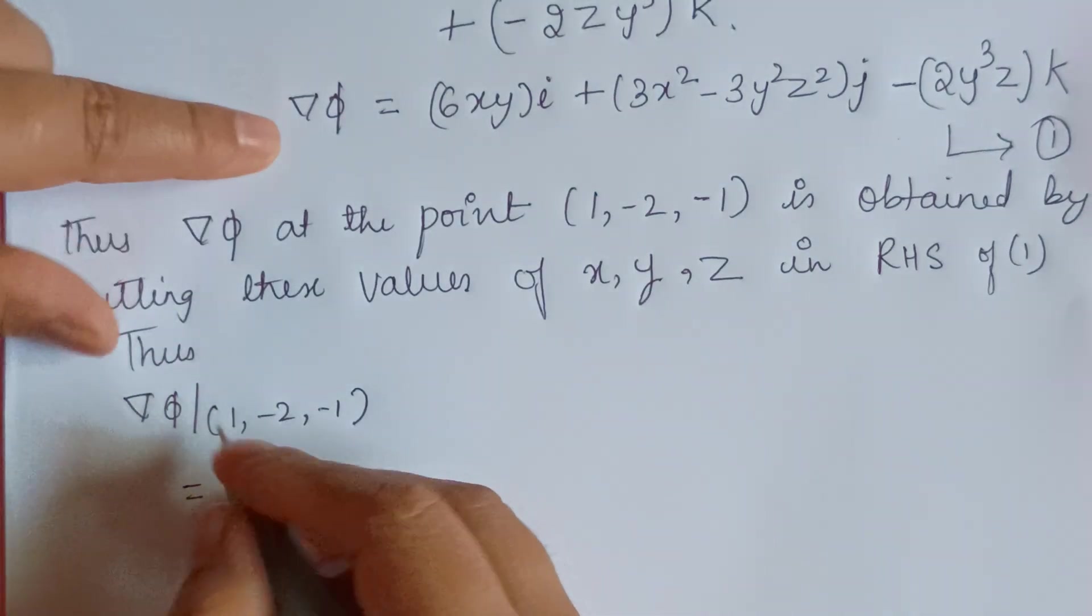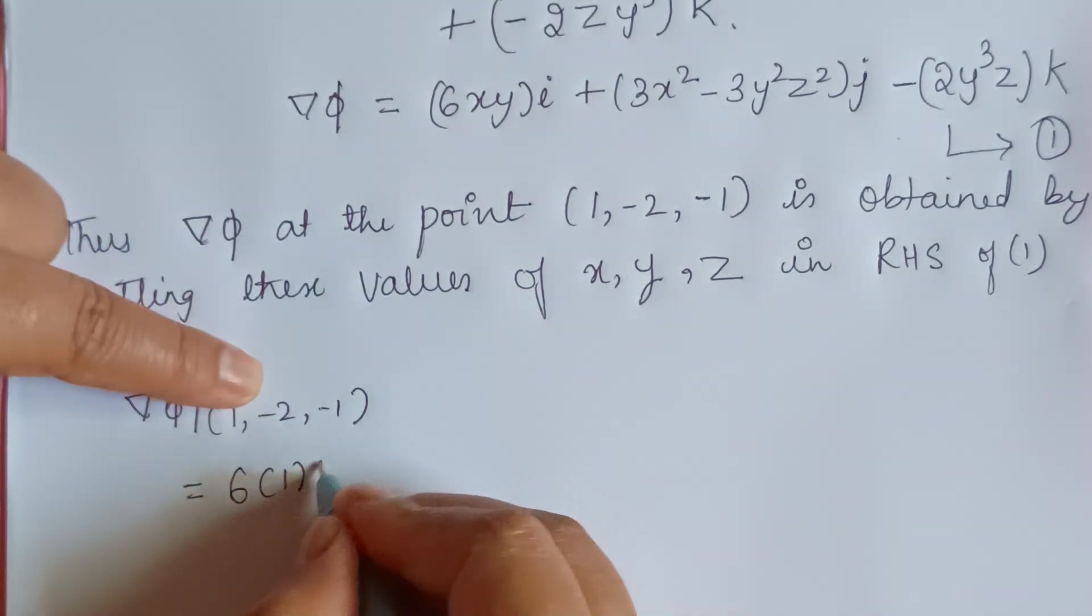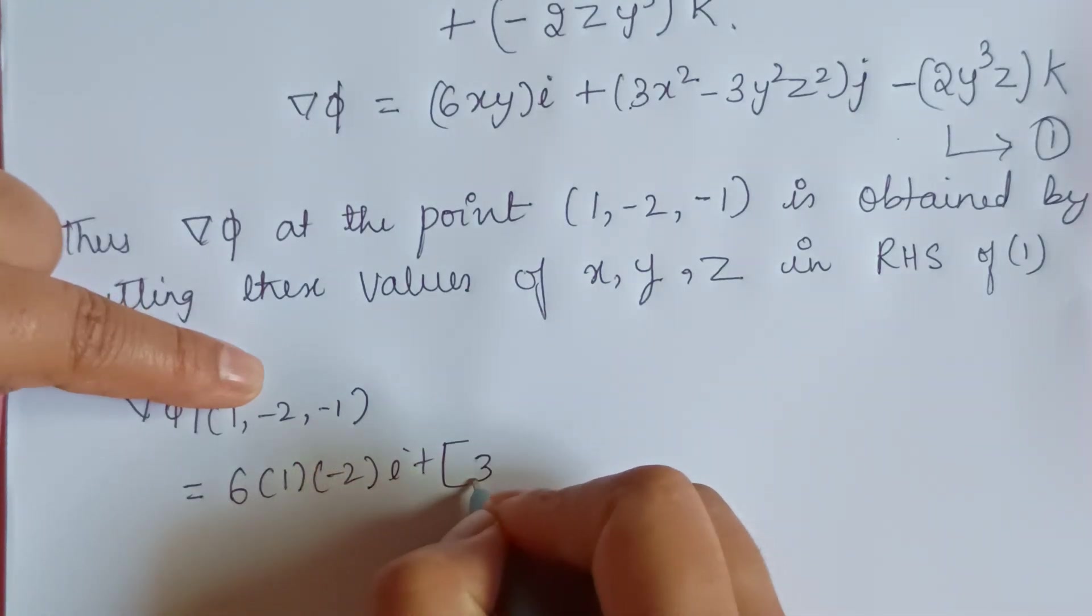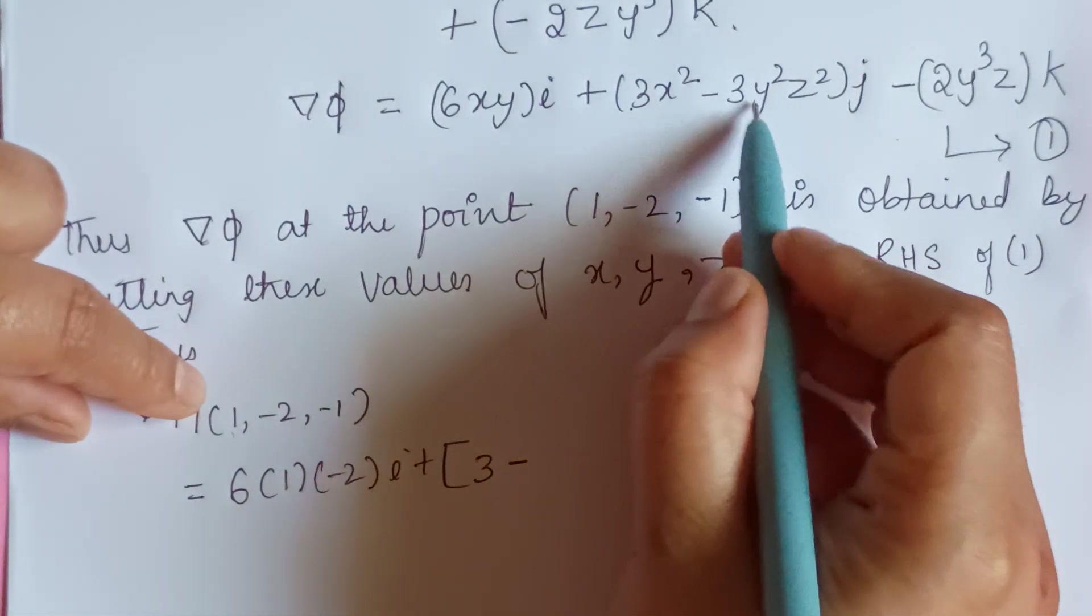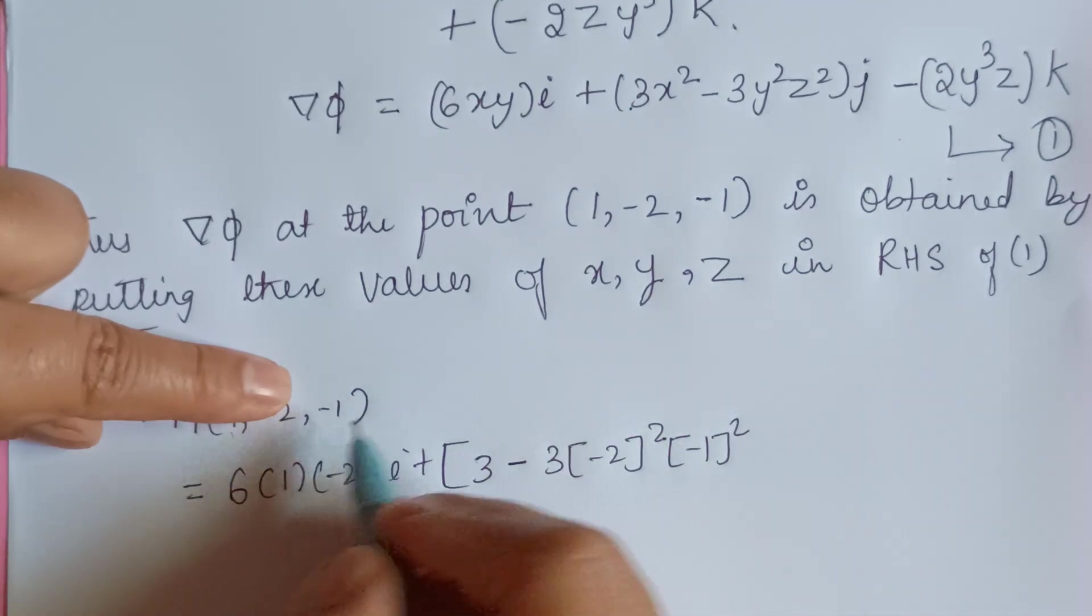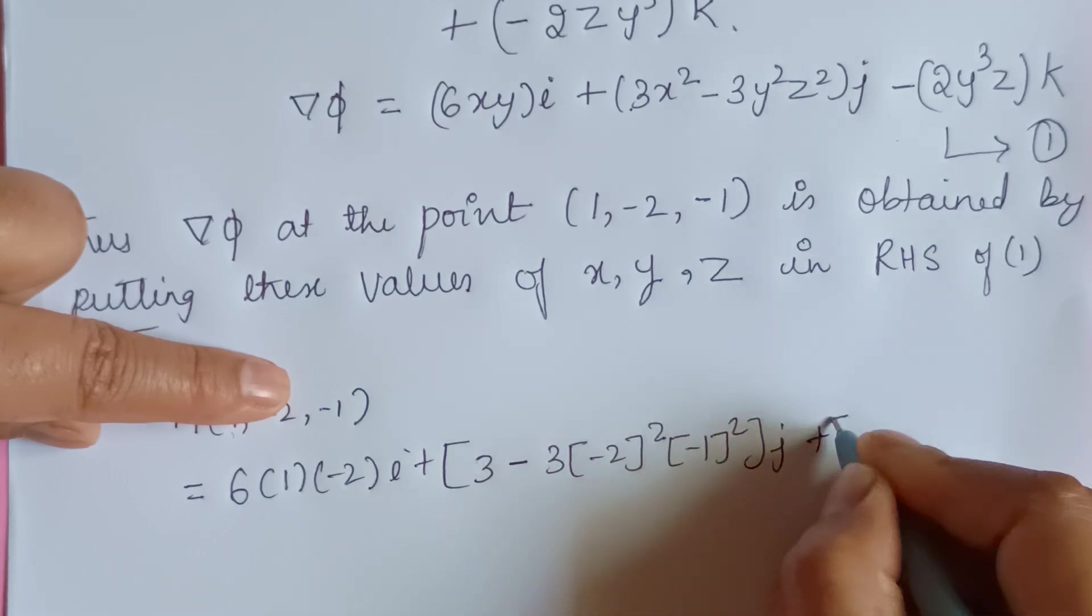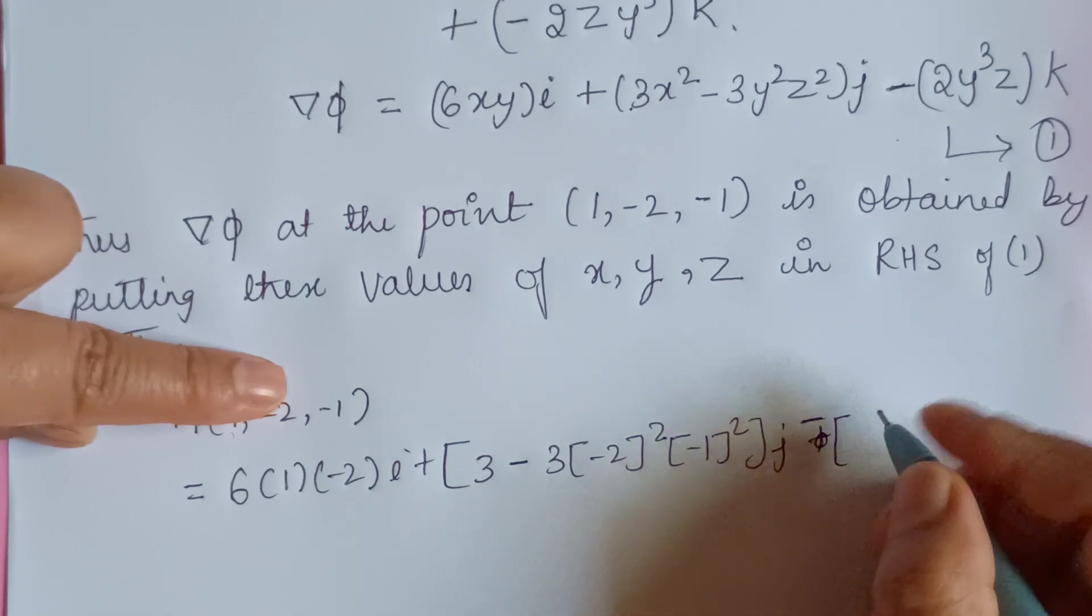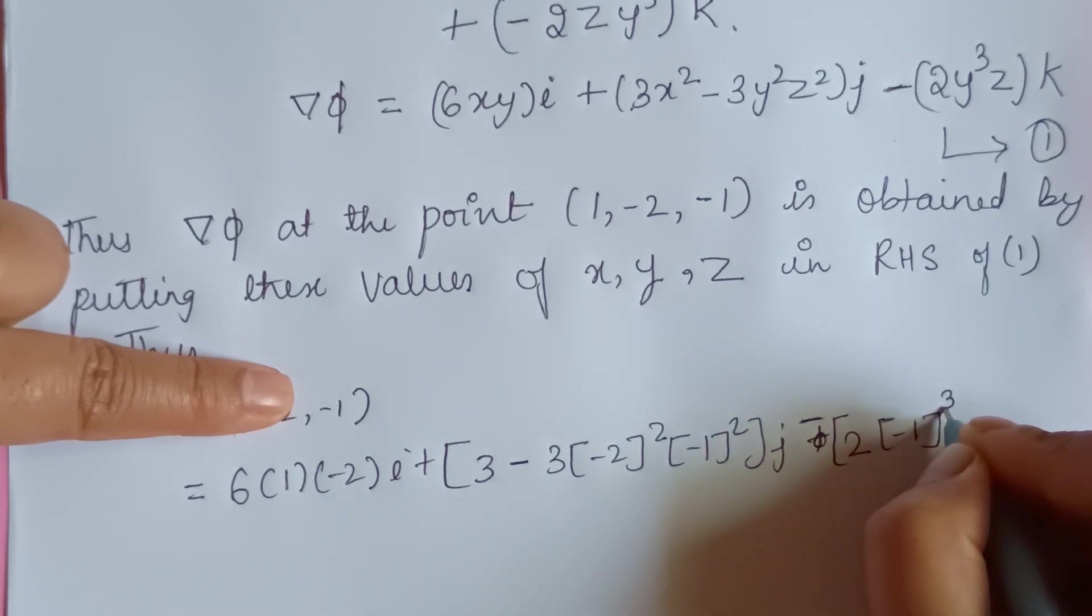So it is 6 × 1 × (-2) i plus 3 × 1² minus 3 × (-2)² × (-1)² j. Plus, I can write it as minus, so here this is 2 × y³ × z.